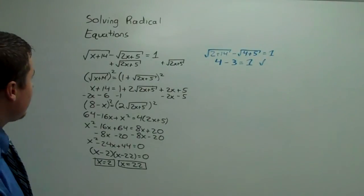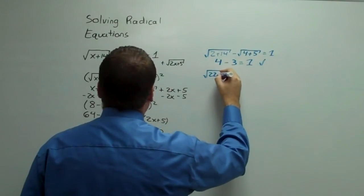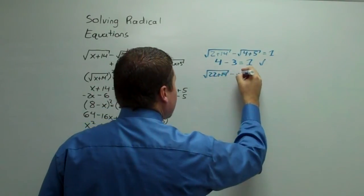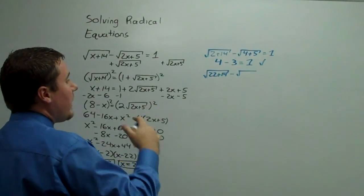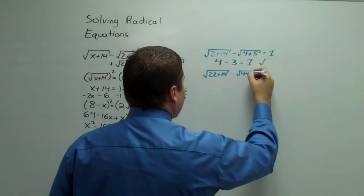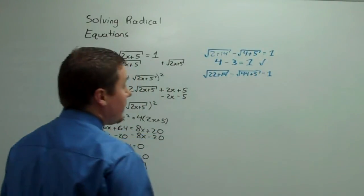Now let's try 22. The square root of 22 plus 14 minus the square root of 22 times 2, which is 44, plus 5, which is 49.